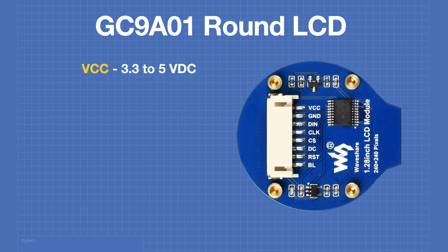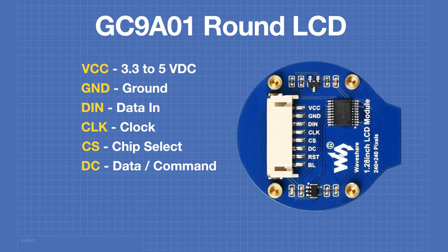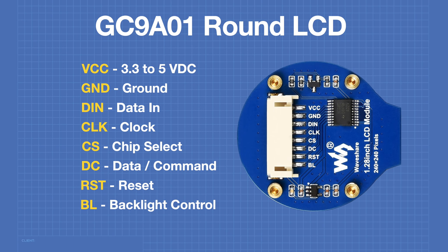VCC can be either 3.3 or 5 volts DC, and this display is compatible with both 3.3 and 5 volt logic. GND is the ground. DIN is the data in — on the SPI bus this is often referred to as MOSI. CLK is the clock input. CS is the chip select, an active low line. DC is the data command pin; depending on the logic state the device will be in data mode or command mode. RST is the reset. BL is the backlight control, which can turn the backlight on or off, and you can also use pulse width modulation to vary the brightness.